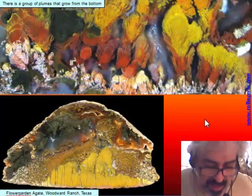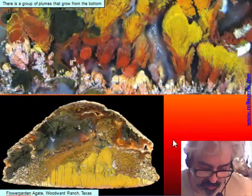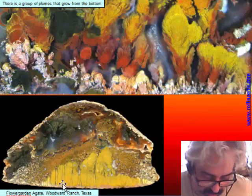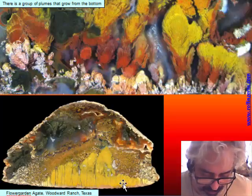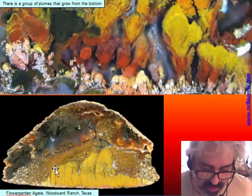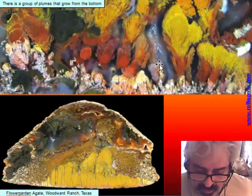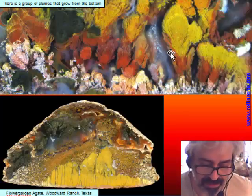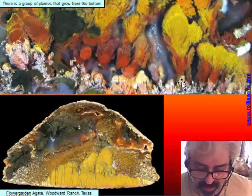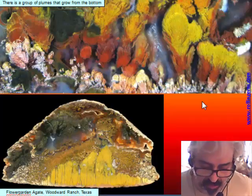For the finish, a strange group of plumes from Wood Wood Ranch called Flower Garden grow from the bottom, mostly as vertical plumes. They are sometimes mixed with moss, and the real Flower Garden has a very intense mix of colors that looks like a garden of flowers.